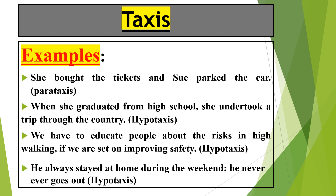Let us look at certain examples. 'She bought the tickets and she parked the car.' — 'She bought the tickets' is one independent clause and 'she parked the car' is the second, joined by a coordinating conjunction. How can we identify clauses in this clause complex? You need to find finite verbs — the first finite verb and the second finite verb. A finite verb is a verb that is limited by tense, time, number, gender, and person.